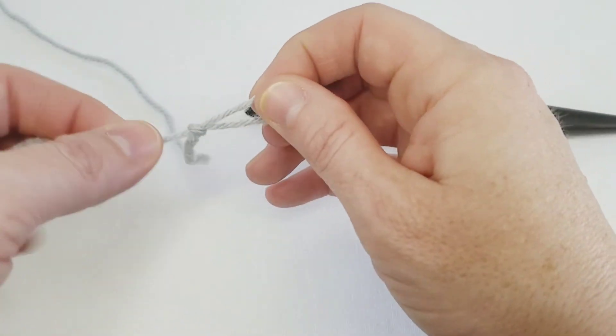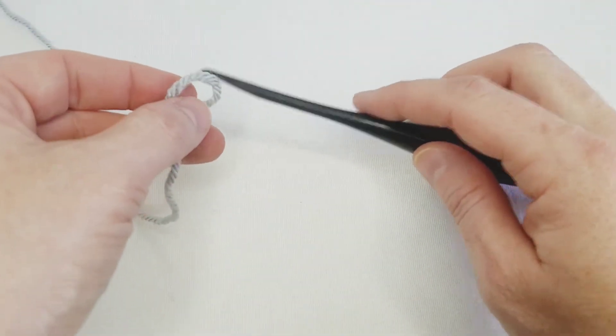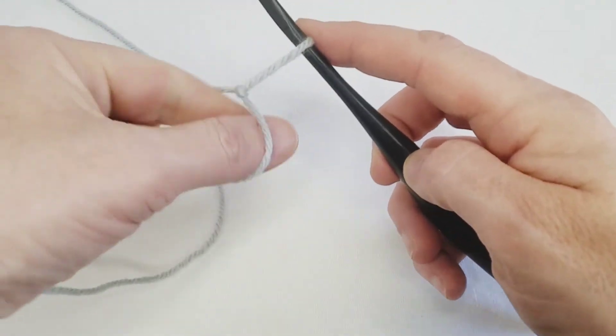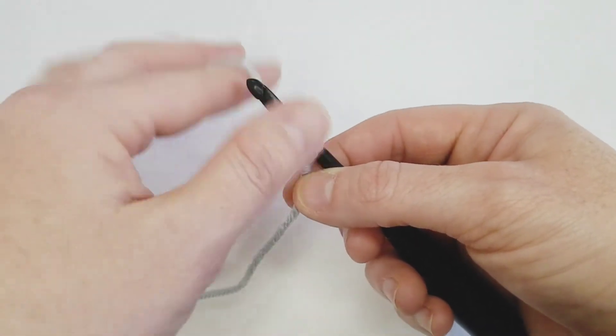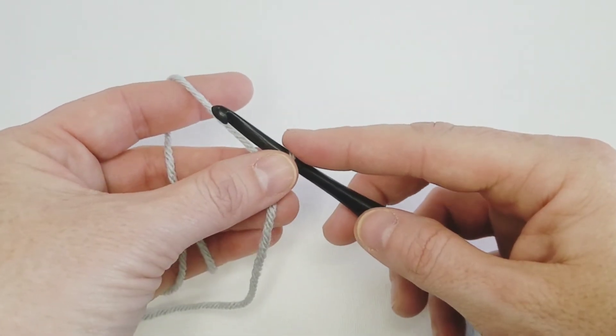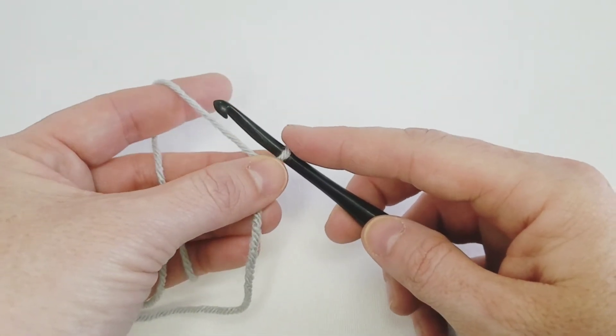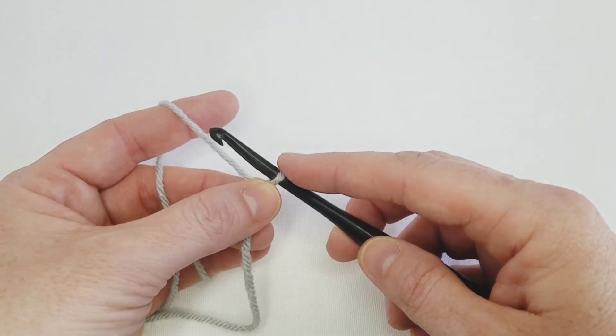Just like regular crochet, for Tunisian crochet you're going to start by making a slip knot and sliding it onto your crochet hook. And then for the purpose of just playing around, we're going to chain some chains—any number of chains.